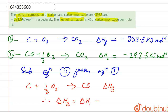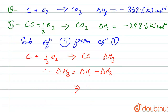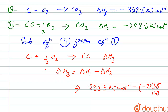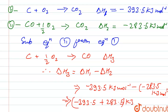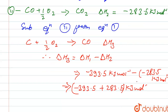Delta H3 is equal to delta H1 minus delta H2. Putting in the values: delta H1 is minus 393.5 kilojoule per mole, minus of minus 283.5 kilojoule per mole. So it becomes minus 393.5 plus 283.5, which gives us minus 110 kilojoule per mole.